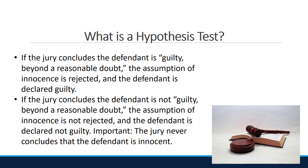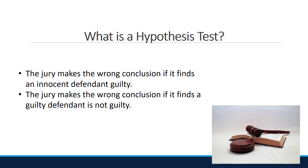The defendant is put on trial and the evidence is presented during the trial. Based on the evidence presented, the jury determines if the evidence goes against the assumption of innocence and supports the prosecutor's claim of guilty beyond a reasonable doubt. If the jury concludes the defendant is guilty beyond a reasonable doubt, the assumption of innocence is rejected and the defendant is declared guilty. If the jury concludes the defendant is not guilty beyond a reasonable doubt, the assumption of innocence is not rejected and the defendant is declared not guilty. It's important to note that the jury never concludes that the defendant is innocent. There is always the possibility that the jury made a mistake — finding an innocent defendant guilty, or finding a guilty defendant not guilty.